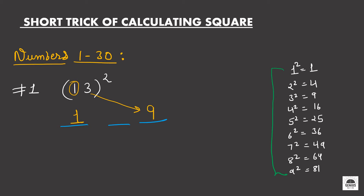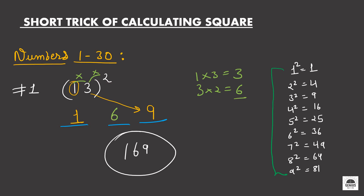Now for the middle blank, we just multiply both numbers and then multiply by 2. So the first step is 1 into 3 which is equal to 3, then 3 into 2 which is equal to 6. So we will write down 6 in the middle blank. Our answer is 169 — 13 squared is equal to 169.